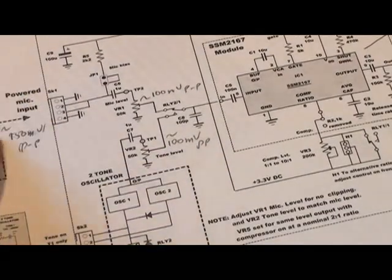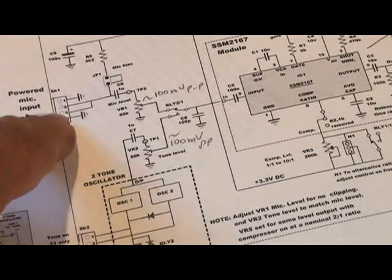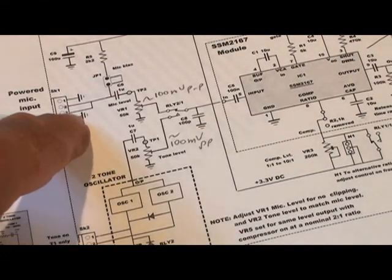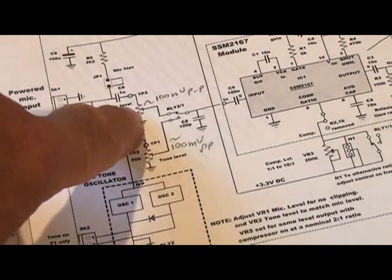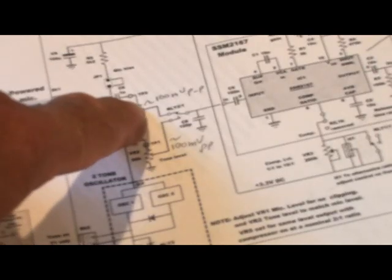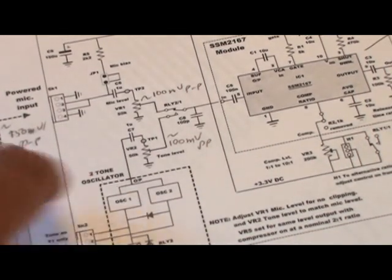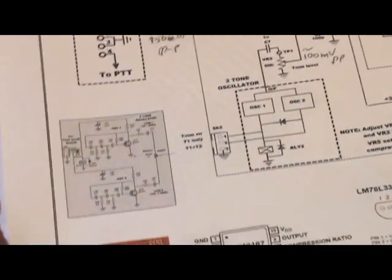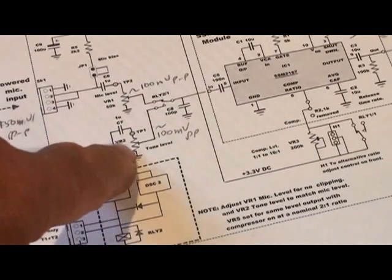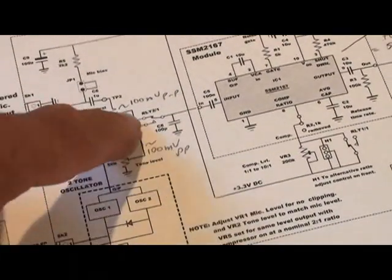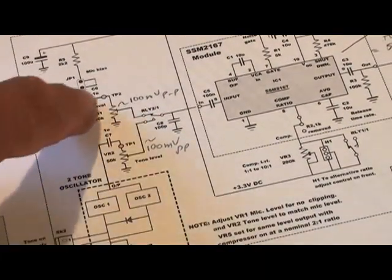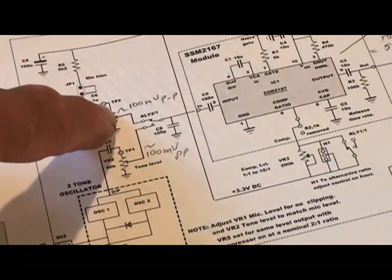So I can set that trim pot for approximately the same level coming out of the microphone preamp. So here is the circuit, microphones, a powered microphone, 50 millivolts, a dynamic microphone, comes in and has its own little level control. And here is the tone oscillators inside this little block and they also have their own little level control. So when I switch tone in, the input to the chip goes from microphone to tone.